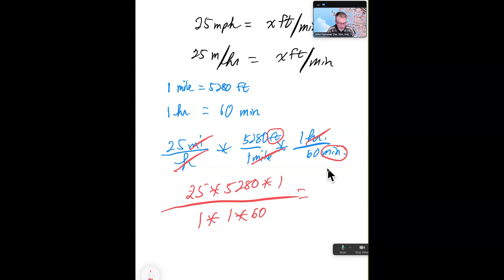Sign, 5280, multiplication sign, and one. You don't really need the one because multiplication by one is the identity property. And then that's going to be over one times one times 60. So we'll just make that over 60. And hit enter for your answer.